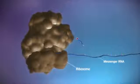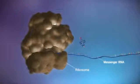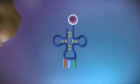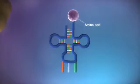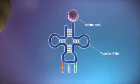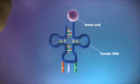The ribosome reads the code in the messenger RNA to produce a chain made up of amino acids. There are 20 different types of amino acid. Transfer RNA molecules carry the amino acids to the ribosome.